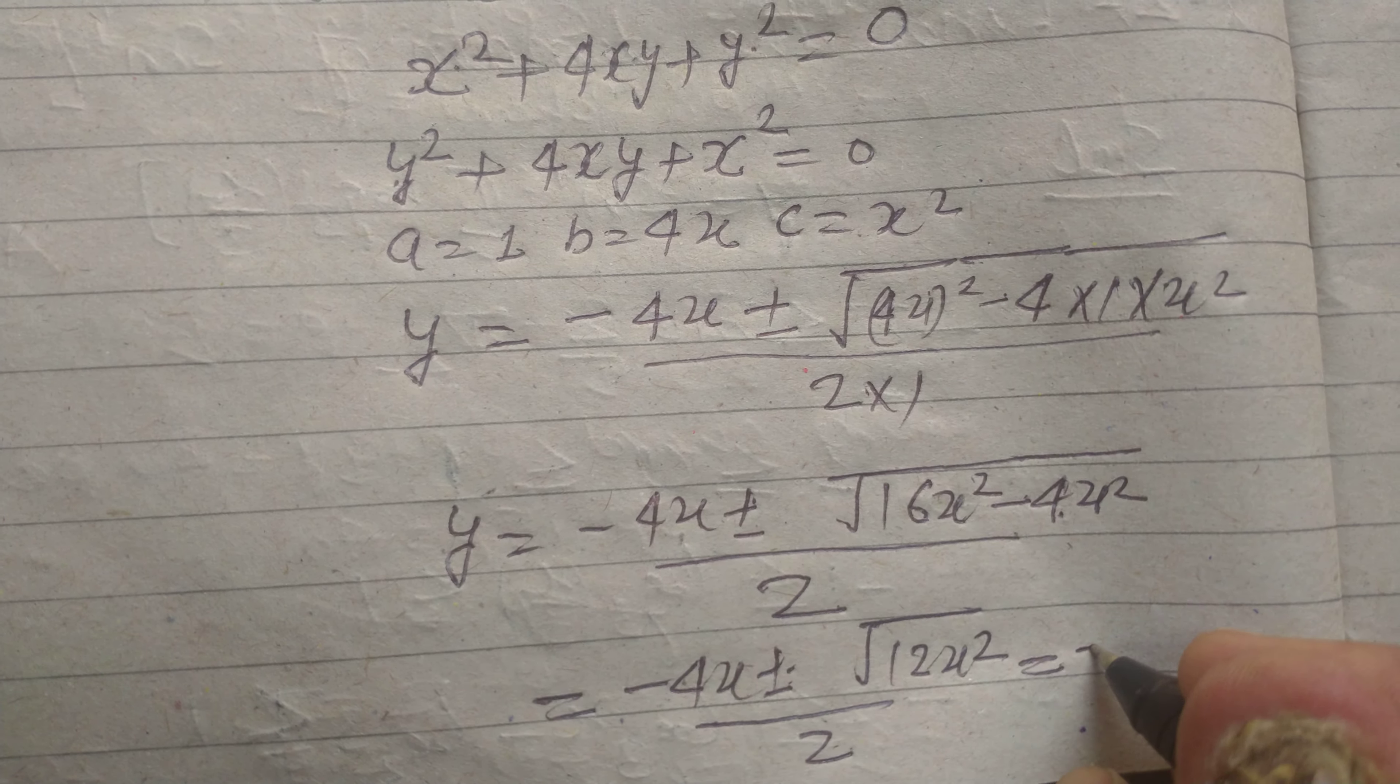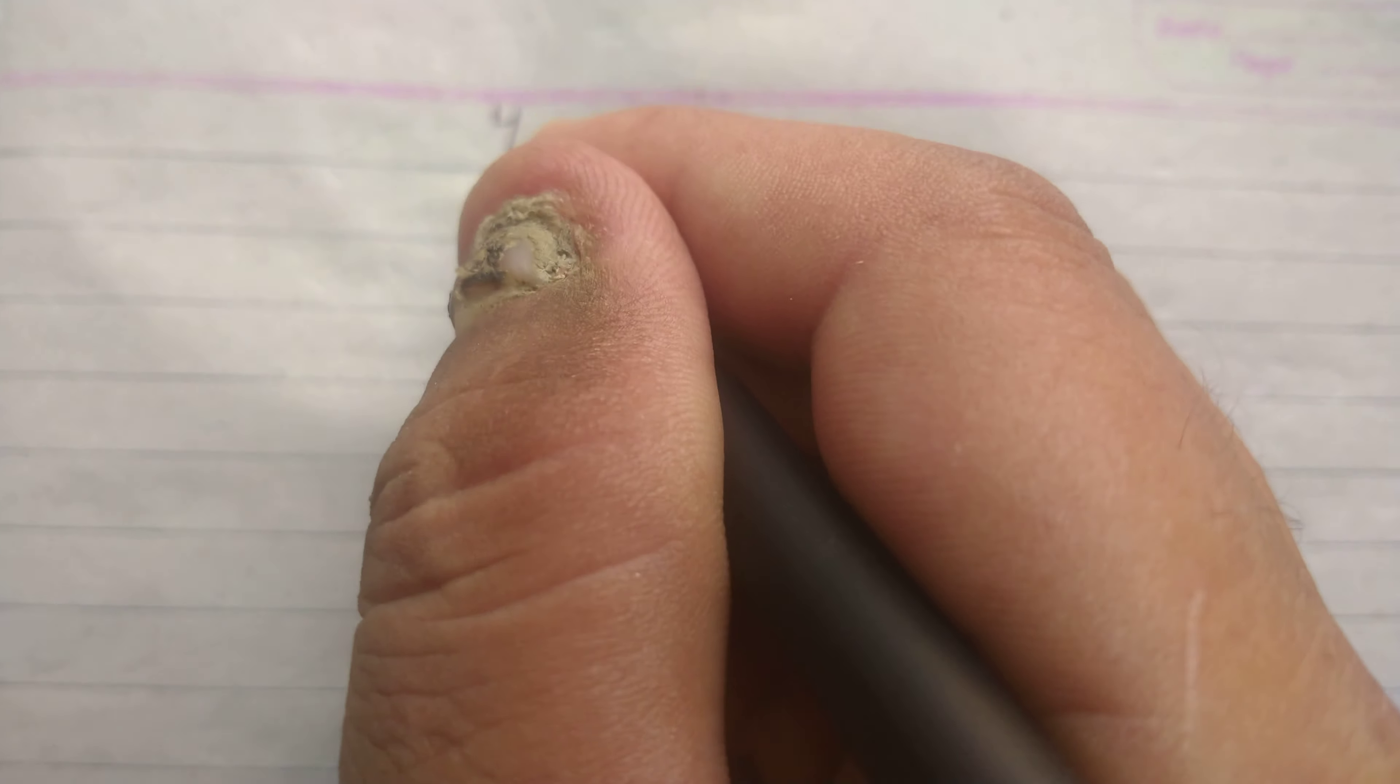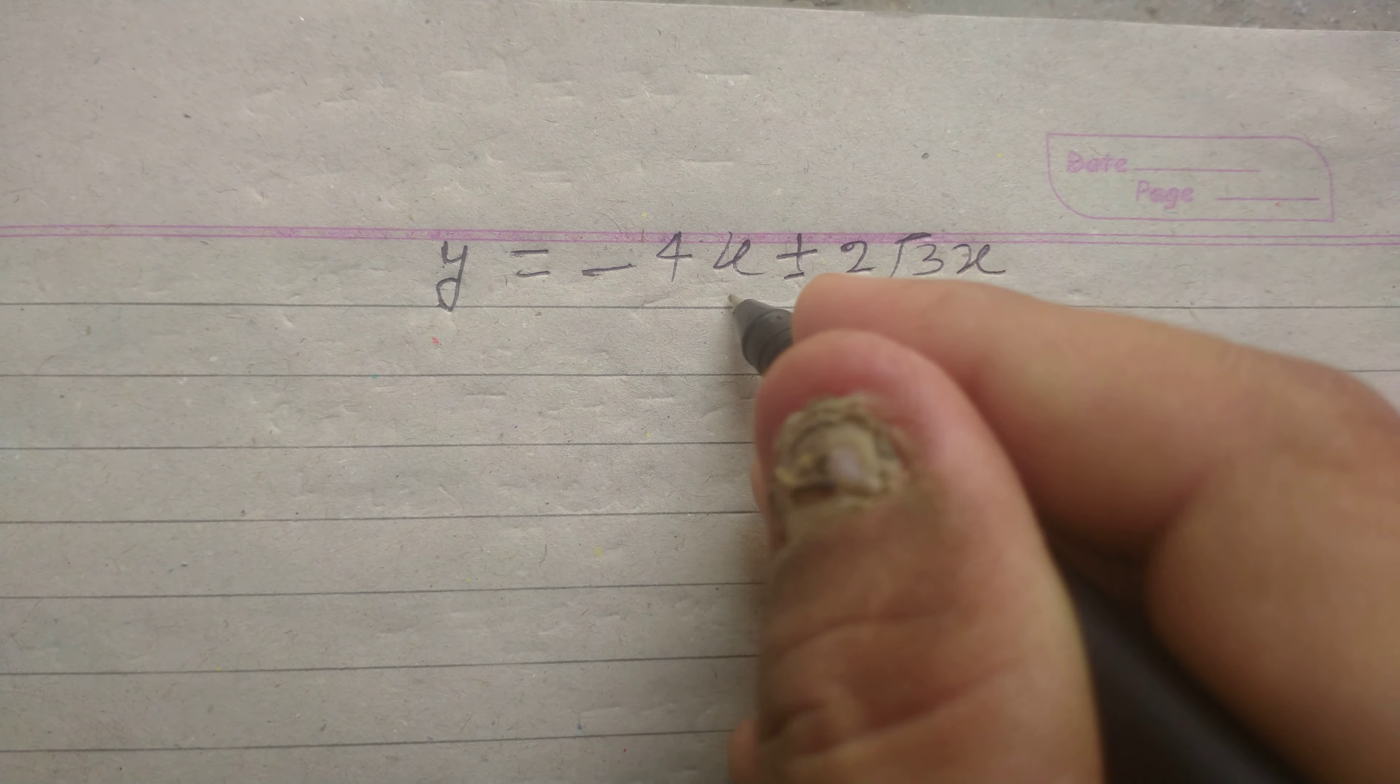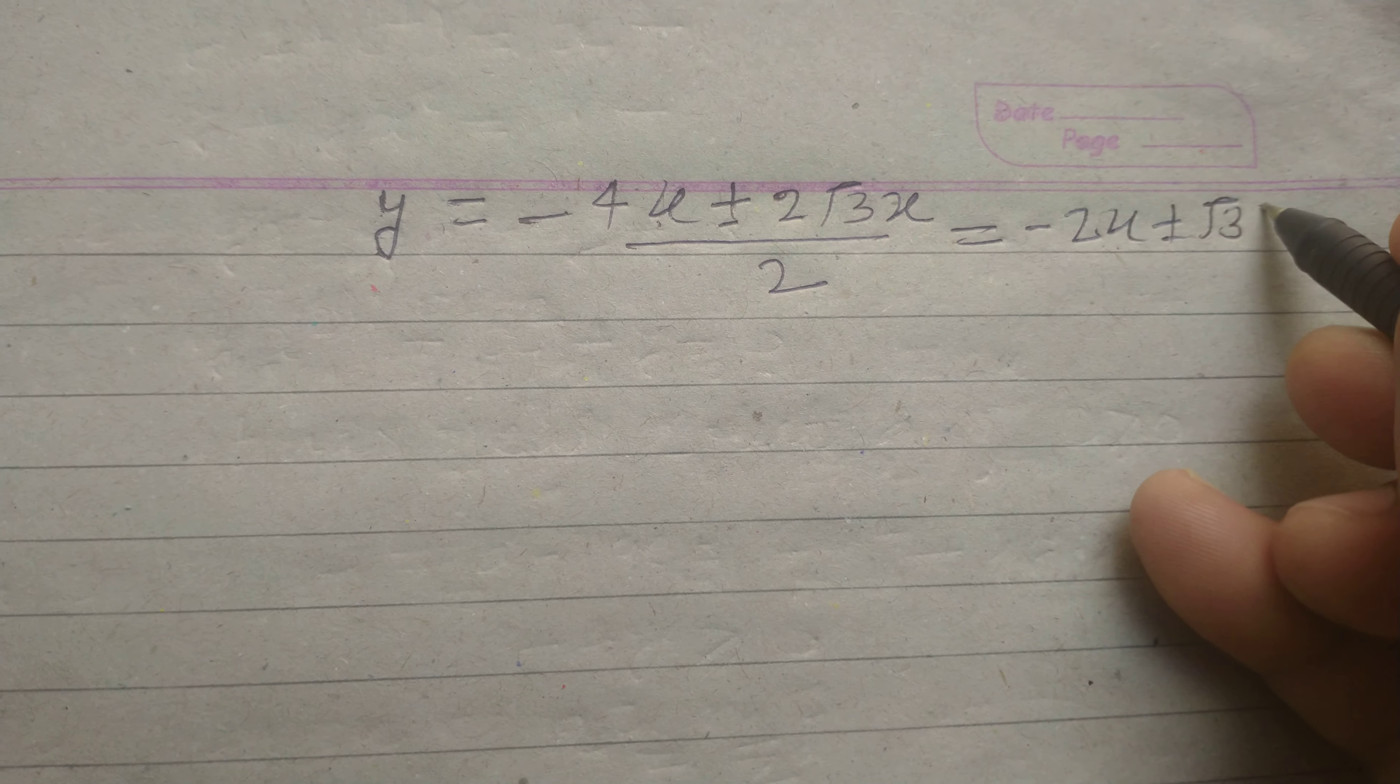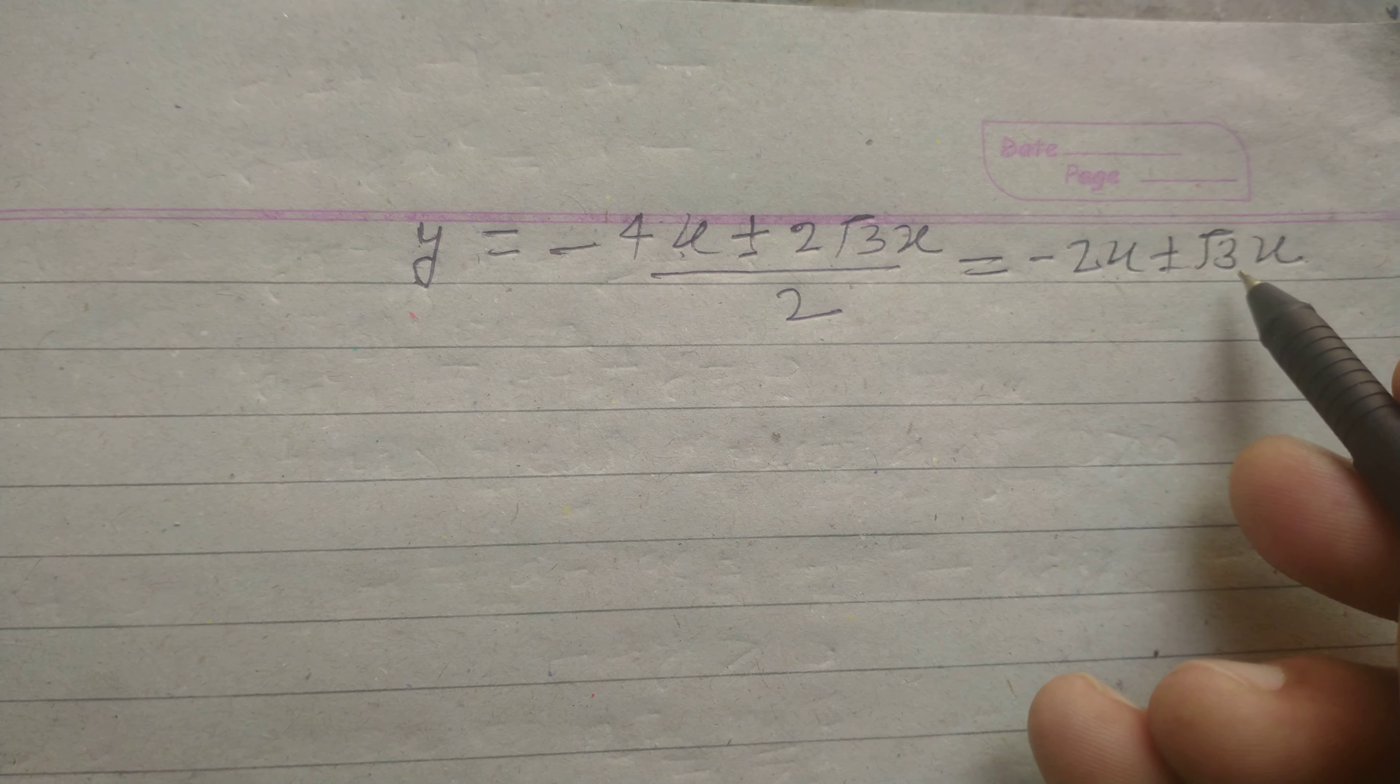And this becomes -4x, 4 threes are 12, so ± 2√3x upon 2. Now we simplified it. y = (-4x ± 2√3x) / 2, so we got -2x ± √3x.